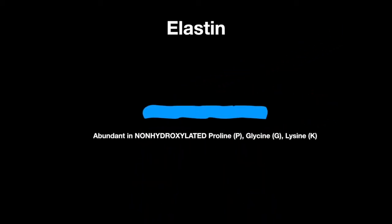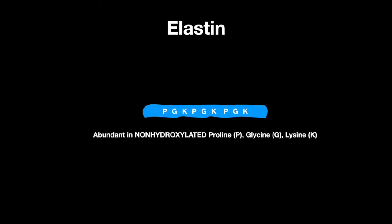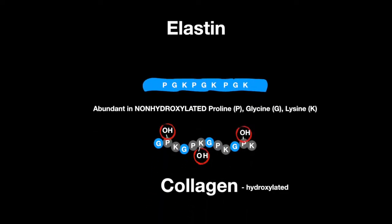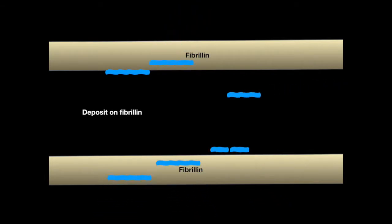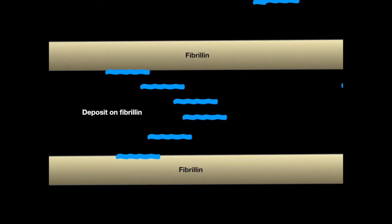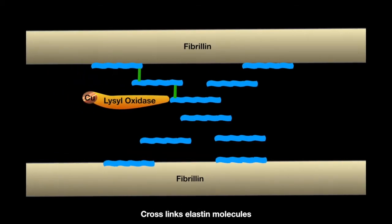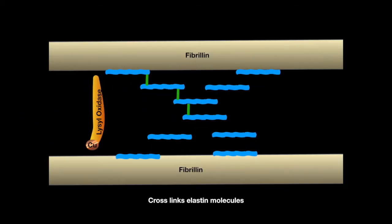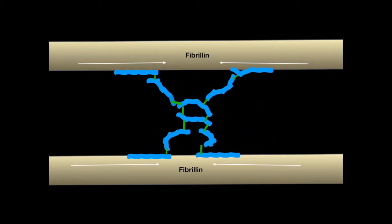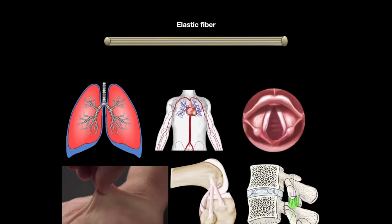Elastin is abundant in non-hydroxylated proline, glycine, and lysine residues, unlike the stronger collagen. Once produced in the cell, it is secreted and deposited on fibrillin, a fibrous protein that makes up the framework for the elastic fiber. Lysyl oxidase, just like in collagen, then comes by and crosslinks the individual elastin molecules to each other, giving it its elastic properties. The elastic fiber can now be used in the respective tissues that need it.